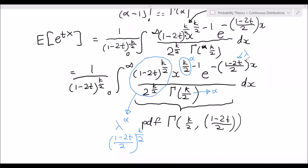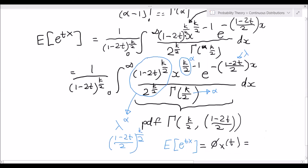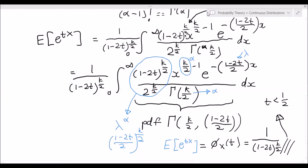That's how easy it is to see the link between the gamma distribution and the chi-squared distribution, and how we can use this knowledge to calculate the moment generating function of the chi-squared distribution. In the end, we know that the moment generating function of the chi-squared distribution — the expected value of e to the tx — is equal to 1 over 1 minus 2t, to the power of k over 2. This is valid for t less than one-half.